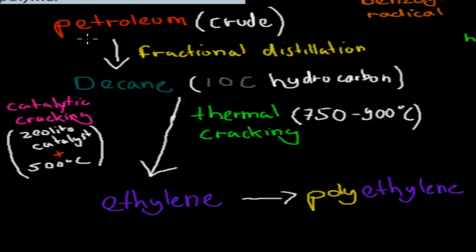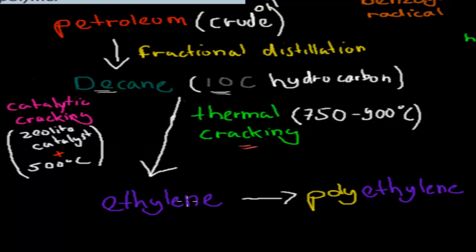We had petroleum first, which is crude oil. Through fractional distillation, we managed to separate it into individual parts, which included decane — a 10-carbon hydrocarbon. We then had two different ways to break it into smaller molecules to get ethylene, which has two carbons. The first way was thermal cracking, using high temperatures between 750 and 900 degrees Celsius. The second was catalytic cracking, using a zeolite catalyst at 500 degrees Celsius — less temperature, but requiring a catalyst. Both steps took us from decane to ethylene.